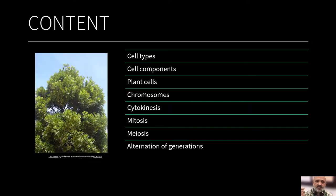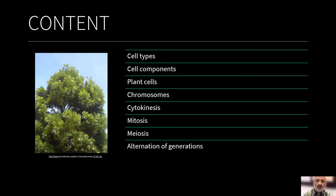This is the overall content for this lecture. We will be looking at cell types — the prokaryotic and eukaryotic cells — the cell components, which constitute organelles as well as structural and functional elements. Then we look at plant cells, chromosomes, cytokinesis, the various phases in the cell cycle, mitosis, meiosis, and the alternation of generations with relation to plant cells and plants.